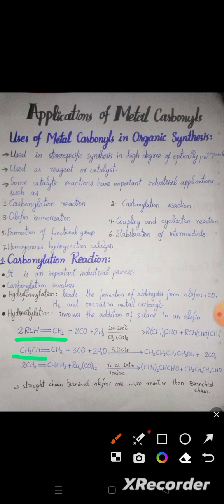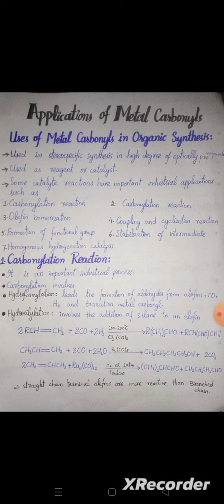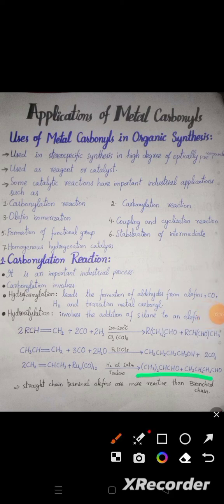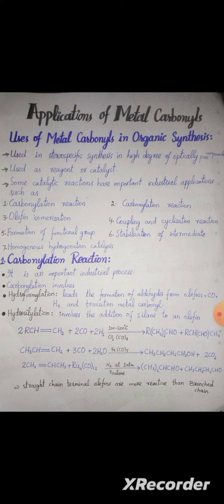In another example, propene (CH₃CH=CH₂) reacts with carbon monoxide and water molecules using a special catalyst. Propylene reacts with hydrogen at 180°C with a toluene catalyst to produce N-butanol (butane-1-ol) and 2-methylpropylaldehyde. Terminal olefins are more reactive than branched chain olefins in these reactions.